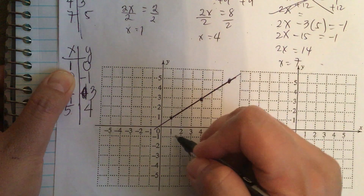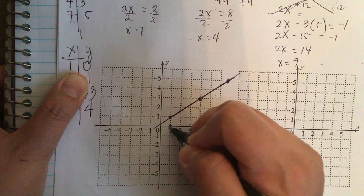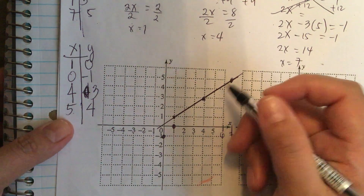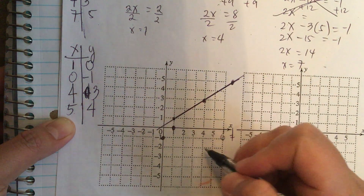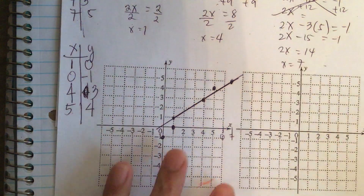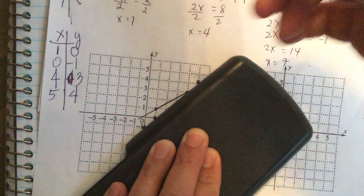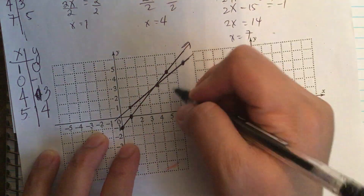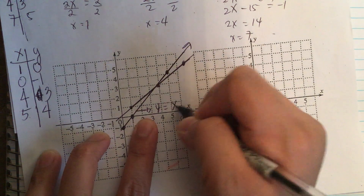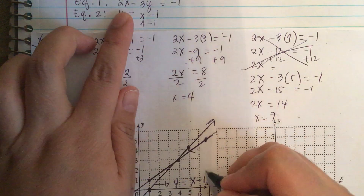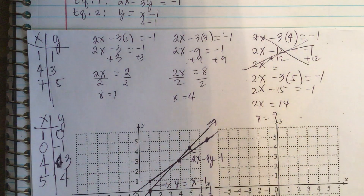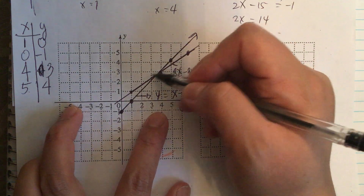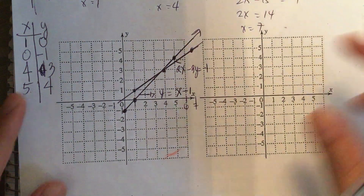So, we have enough points. We plot (1, 0), (0, -1), (4, 3), and (5, 4). We graph our equation and make our line. This is the line y equals x minus 1, and this is the line 2x minus 3y equals negative 1. The solution to this system of equations is the point (4, 3). So, we solved it by graphing. Now we do the elimination method.